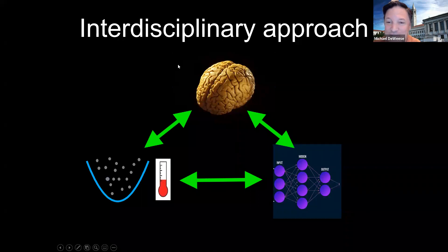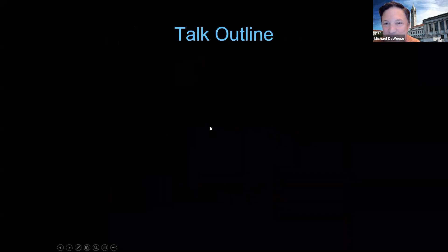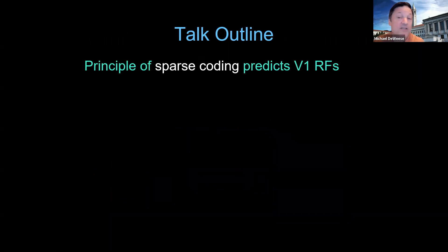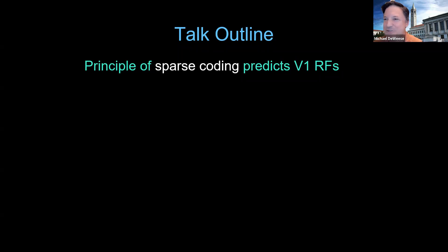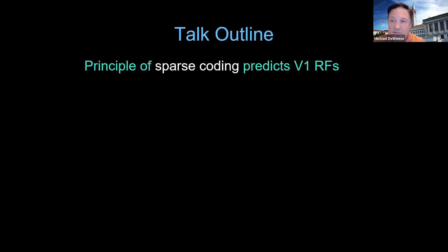There are mathematical tools we use for non-equilibrium stat-mec to understand learning in the brain and also in artificial neural networks. Today I'll focus on that section just to keep it under 45 minutes. Here's my outline. I'm going to talk about a principled way of thinking about how to develop theories for how the brain works, as opposed to a stamp-collecting approach where you just collect all these facts and details.